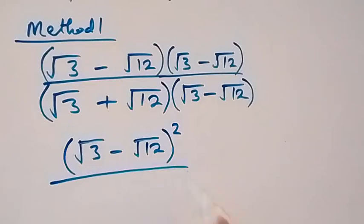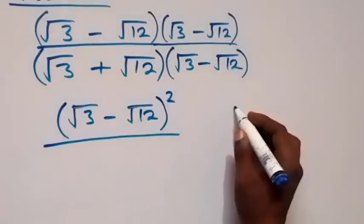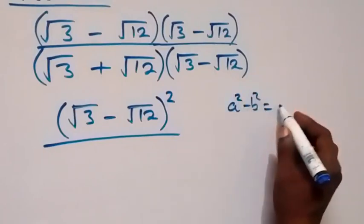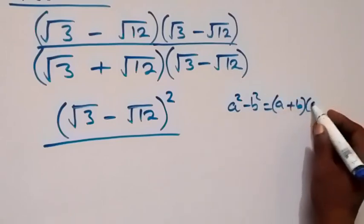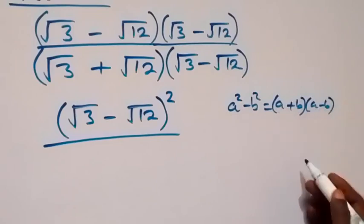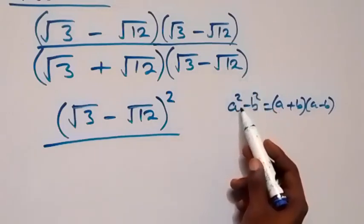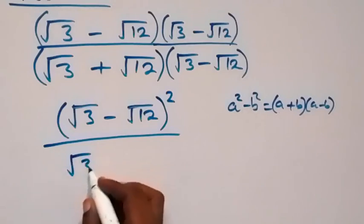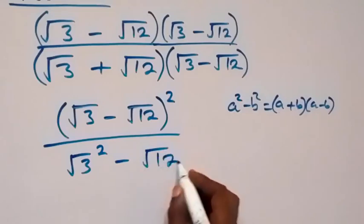And from here, we have it in form of difference of two squares, that is a squared minus b squared equals to a plus b multiply by a minus b. We can write it as root 3 squared minus root 12 squared.